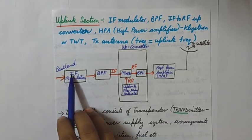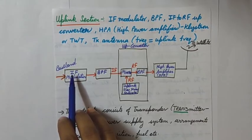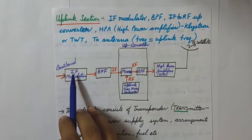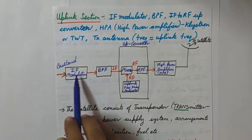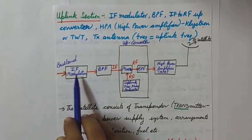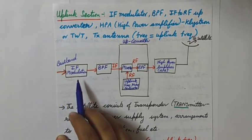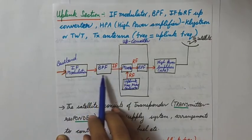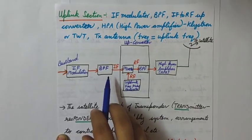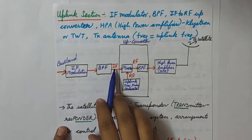IF stands for intermediate frequency modulator — intermediate because this is not the main frequency to be sent to the satellite; it is in an intermediate stage. The modulation process takes place here: FM, FSK, PSK, QAM — any modulation technique will be applied. The output is then passed through a bandpass filter to remove unnecessary frequency components.